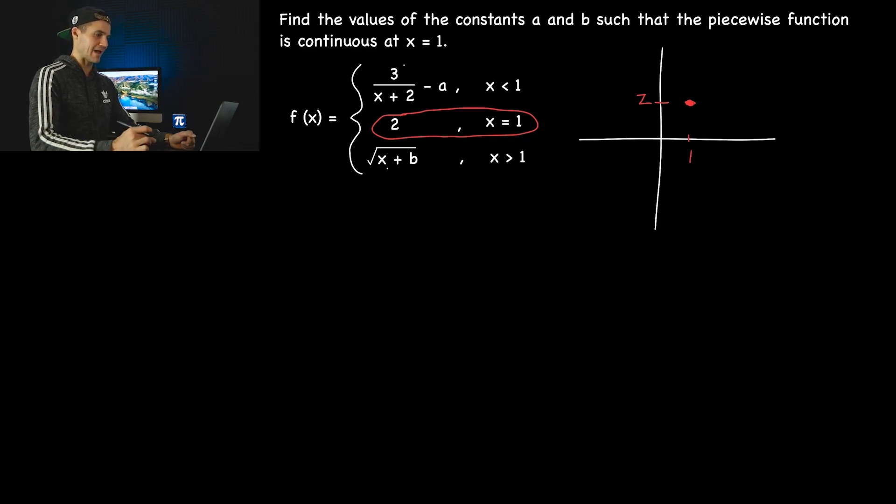This function in green is defined for all x values less than 1. I'm not sure exactly how it will look since it depends on the a value—it's a rational function—but I'll show it as a line just to give you a visual, even though I know it's not actually a line.